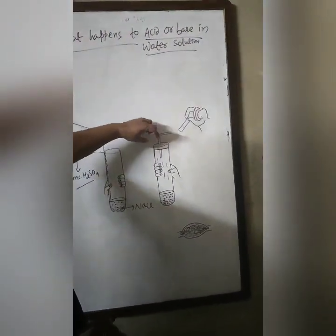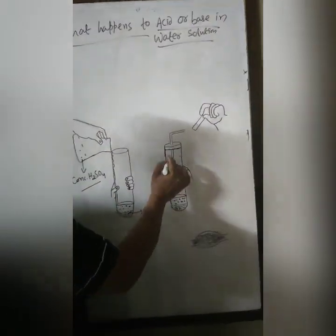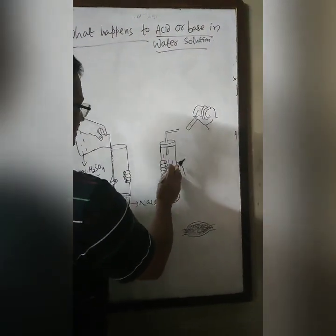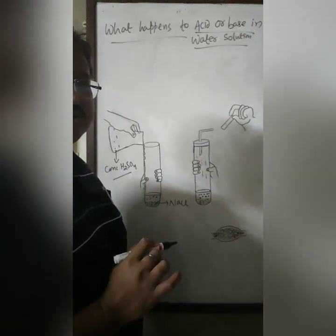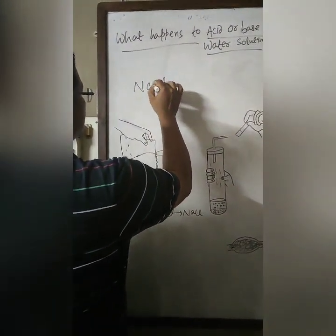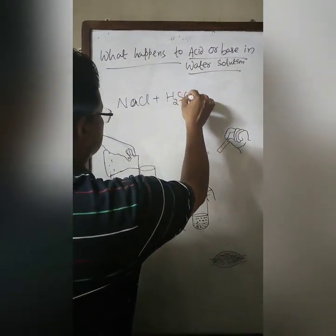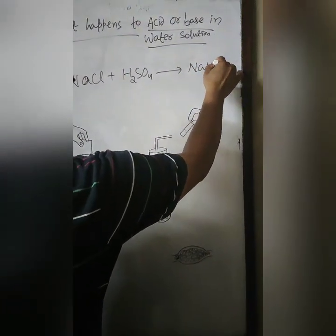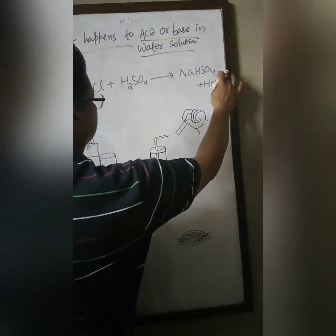After closing it with a cork and fitting with a tube, you will find some vapors start coming out. These vapors are actually the vapors of hydrogen chloride, because NaCl plus concentrated H₂SO₄ produces NaHSO₄ (sodium hydrogen sulfate) and HCl.